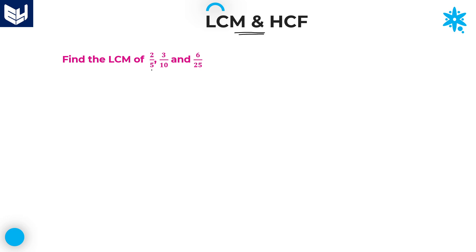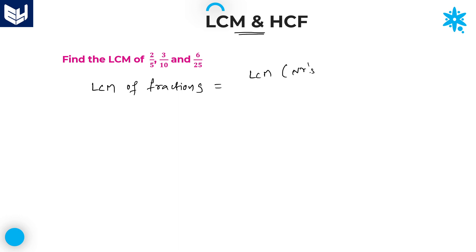Find the LCM of 2/5, 3/10, and 6/25. If you observe carefully, these are fractions. As I already explained while discussing the concept of LCM and HCF — if you go through the previous sessions — LCM of fractions is equal to LCM of numerators divided by HCF of denominators. In this way, we have to calculate the LCM of fractions.